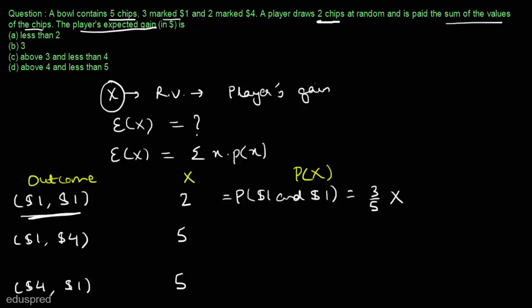This is a case of no replacement — once we draw a chip we do not put it back into the bowl. So after picking one chip, four chips remain. Since we want the second chip to also be marked one dollar, there are two such chips left. So the probability for this outcome is three-fifths times two-fourths, which equals six divided by twenty.